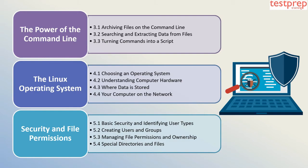Topic four: the Linux operating system. This includes one, choosing an operating system; two, understanding computer hardware; three, where data is stored; four, your computer on the network. Topic five: security and file permissions. This includes one, basic security and identifying user types; two, creating users and groups; three, managing file permissions and ownership; four, special directories and files.